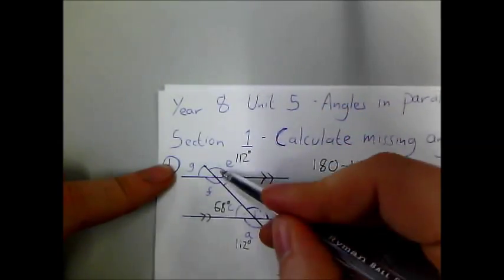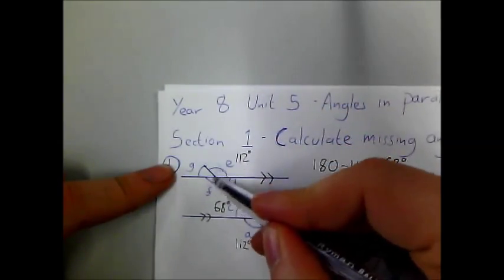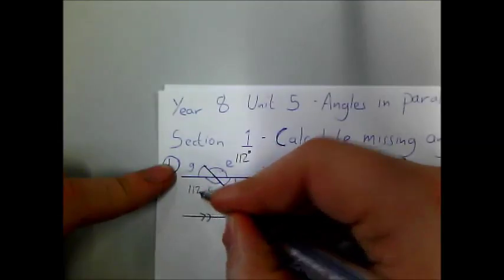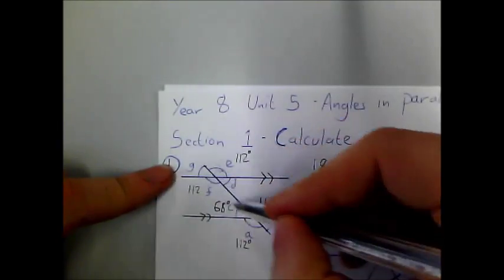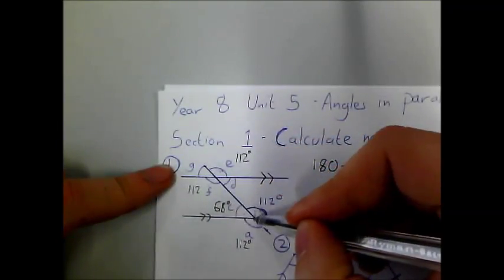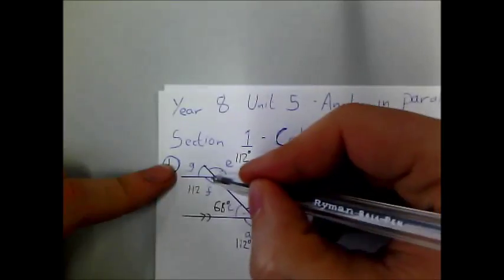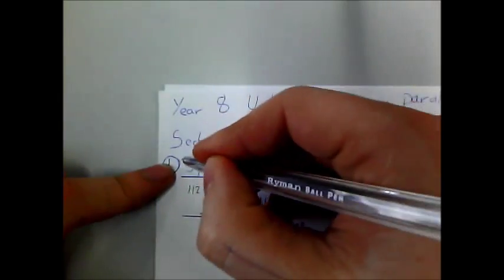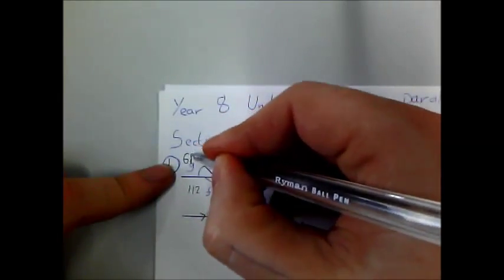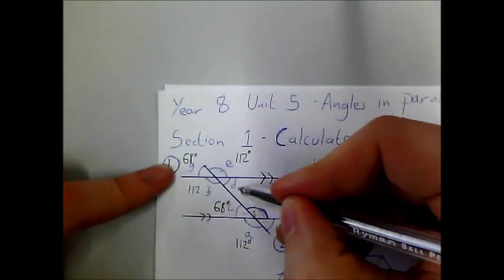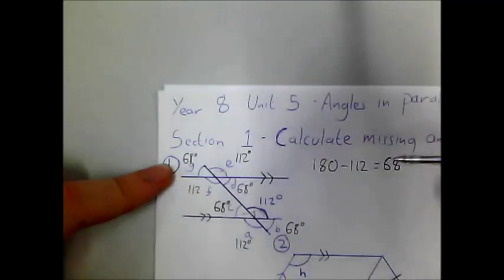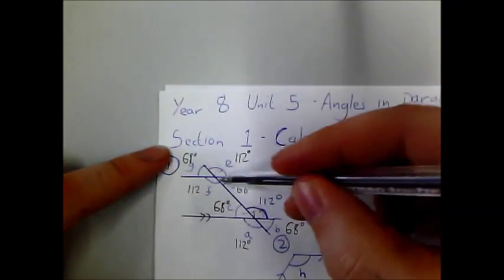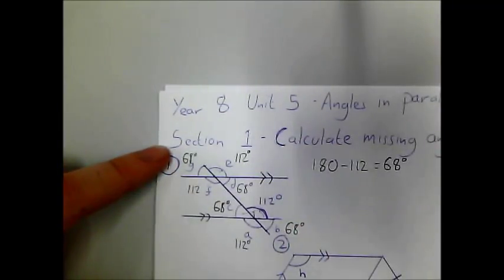Angle E is also going to be 112. And now I can work out the rest — these opposite angles are 112. This 68 degrees is above and to the left, so above and to the left is also 68 degrees, and then this one here is also 68 degrees. I always just use the positioning to help.